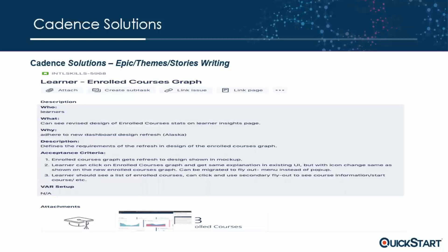These are important sections to define within a story. You may want to add or remove items, but based on my studies with Mike Cohn, this format is very useful — not only for understanding what is being asked, but also from a QA perspective. From the QA standpoint, you can take the acceptance criteria and turn them directly into test cases, then execute on them to make sure every single acceptance criterion has been met.